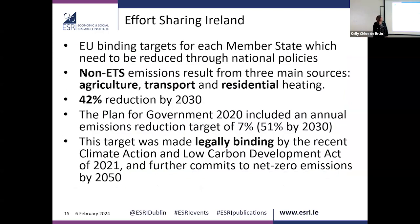The other EU mechanism is the Effort Sharing Regulation. For emissions that don't fall under the ETS, the EU sets legally binding national targets for member states, who must use national policies to reduce them. These emissions come from three main sources: agriculture, transport, and residential heating. Ireland's non-ETS target is a 42% reduction by 2030.